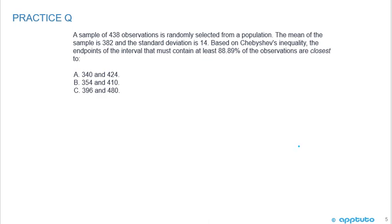the endpoints of the interval that must contain at least 88.89% of the observations are closest to A, 340 and 424, B, 354 and 410, or C, 396 and 480.